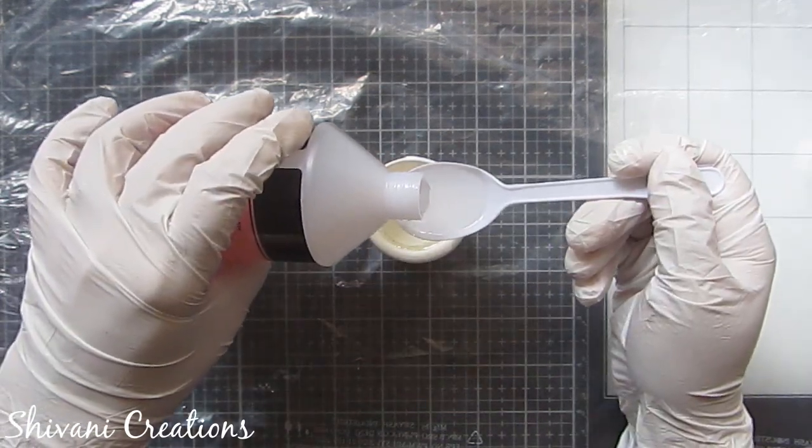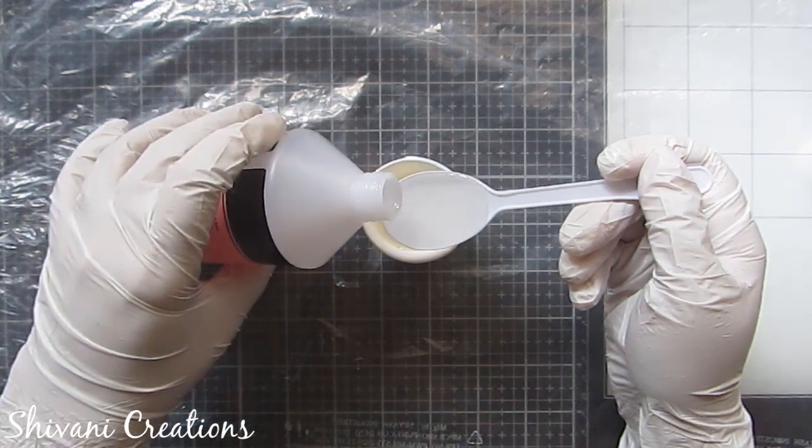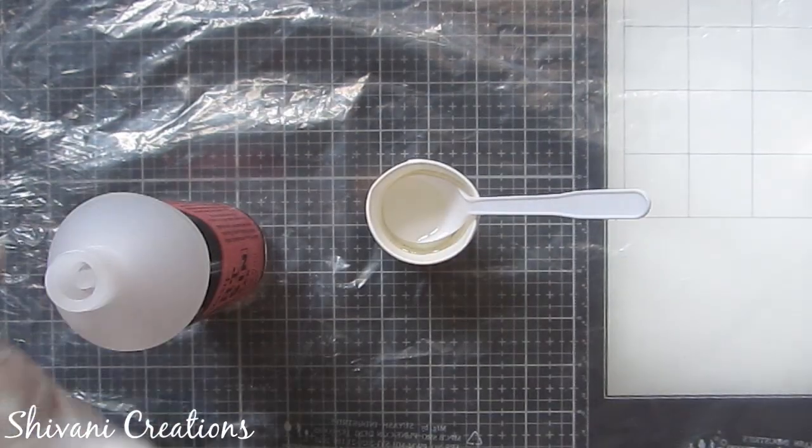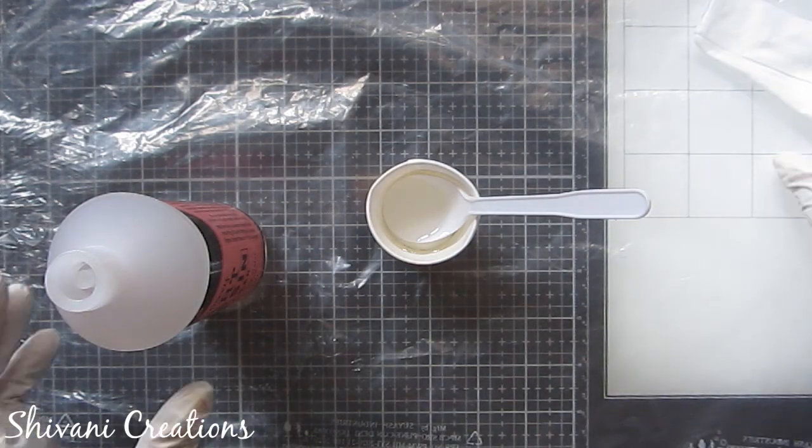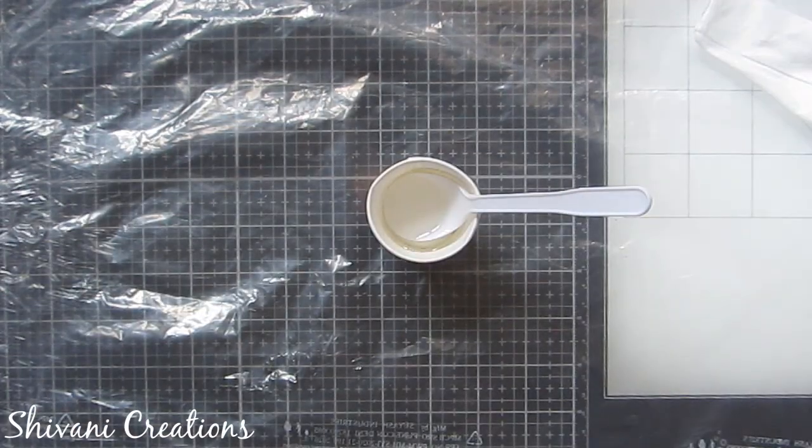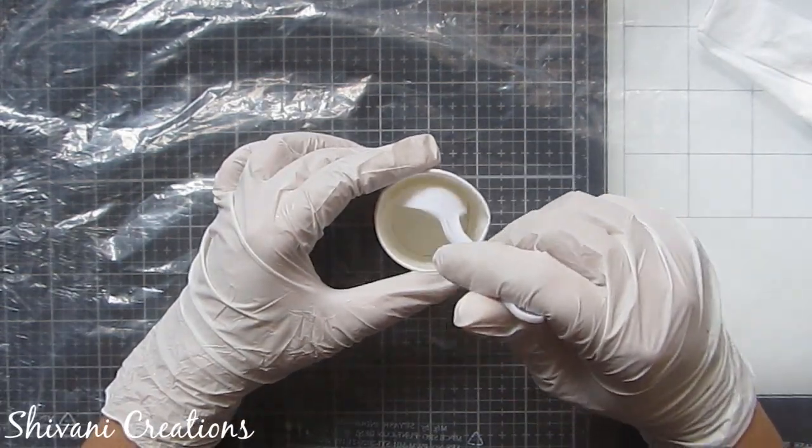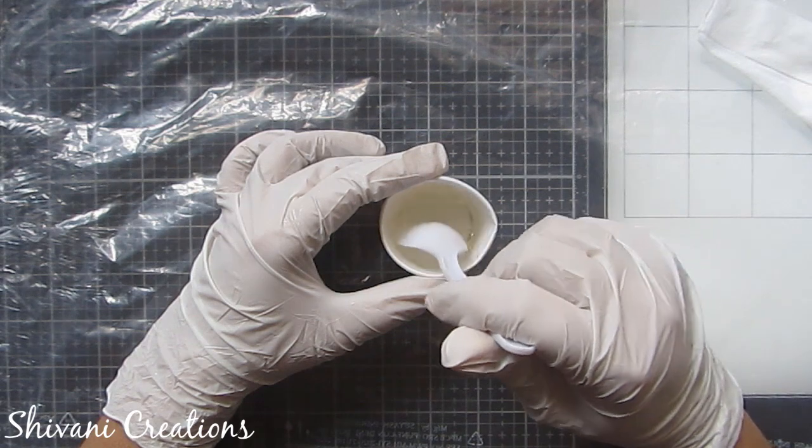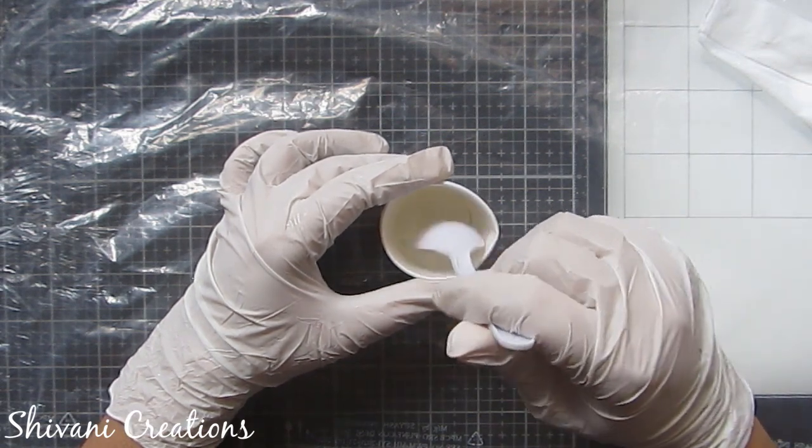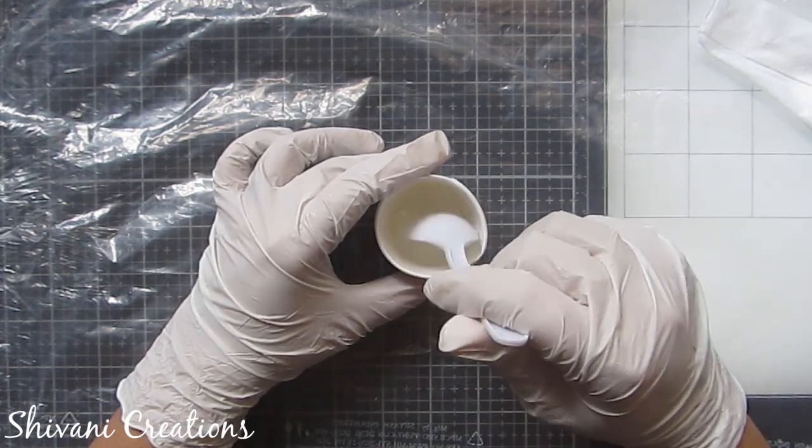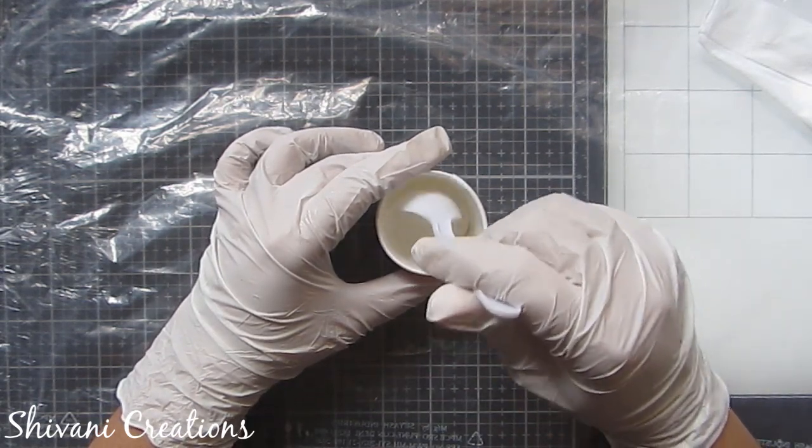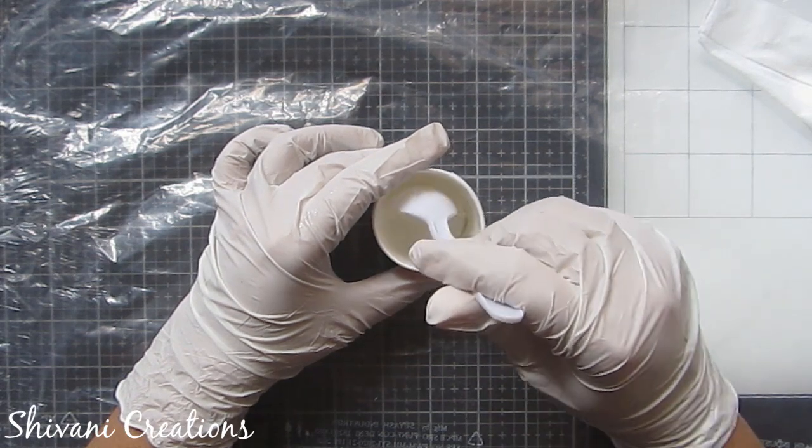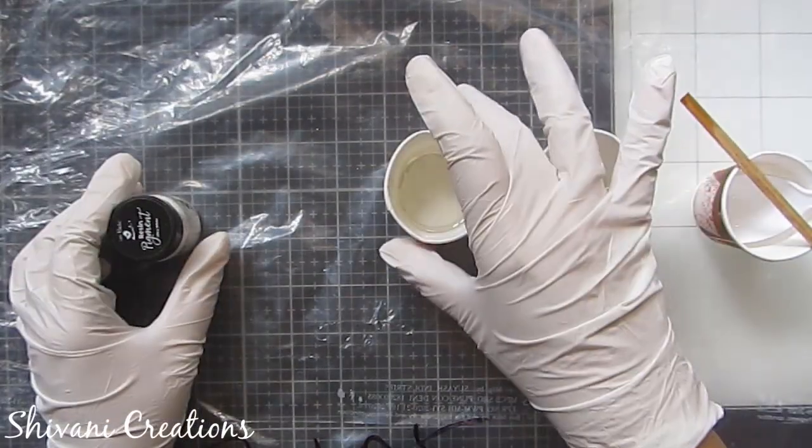The workspace where you are making the resin projects should be ventilated and don't switch on the fan because any air particle or dust might affect your resin work. So just keep your windows open and keep your place quite ventilated. Now we need to mix this mixture very well for approximately two to three minutes in one direction and do it very slowly so that the bubbles will not get developed. Though this resin is automatically bubble removable so you don't need to worry for that, just stir it very well in one direction for few minutes.